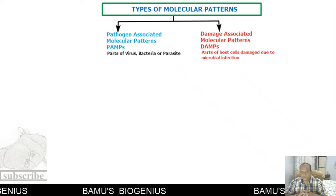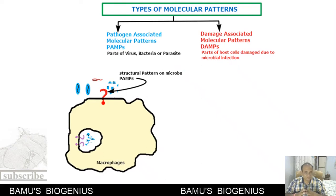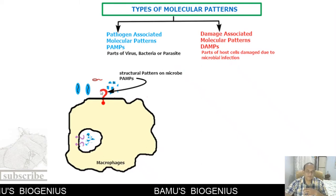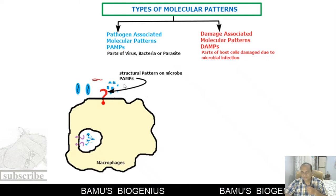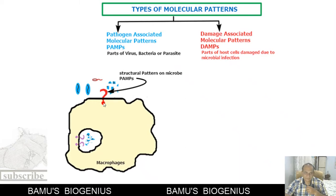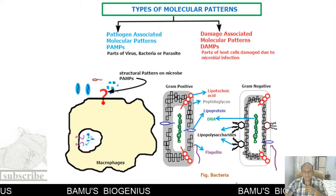Both PAMPs and DAMPs are recognized by hook-like structures present on cells of the immune system — for example, macrophages. These hook-like structures have a pattern-binding domain responsible for identification of PAMPs and DAMPs. These pattern recognition receptors, or PRRs, are present on the surface of macrophages, inside their endosomes, or in the cytoplasm.